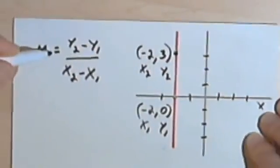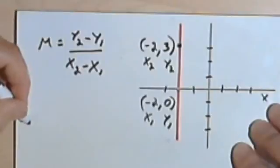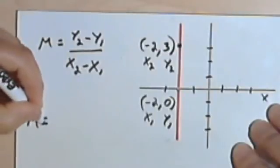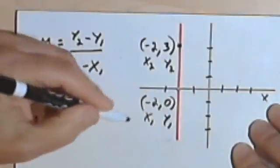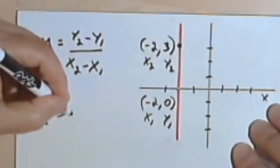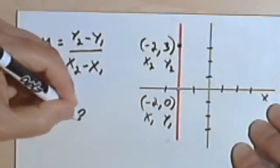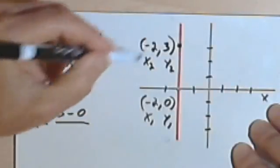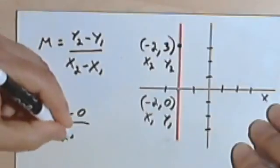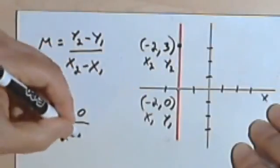So let's plug these numbers into my equation for the slope. So the slope is going to equal, y sub 2 is 3, y sub 1 is 0. So 3 minus 0 over negative 2 minus negative 2 again.